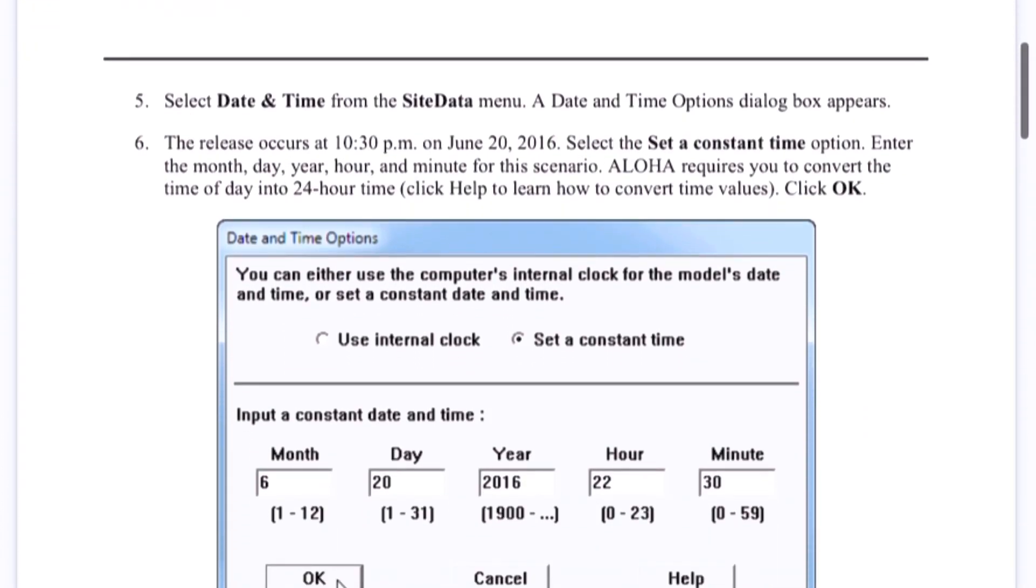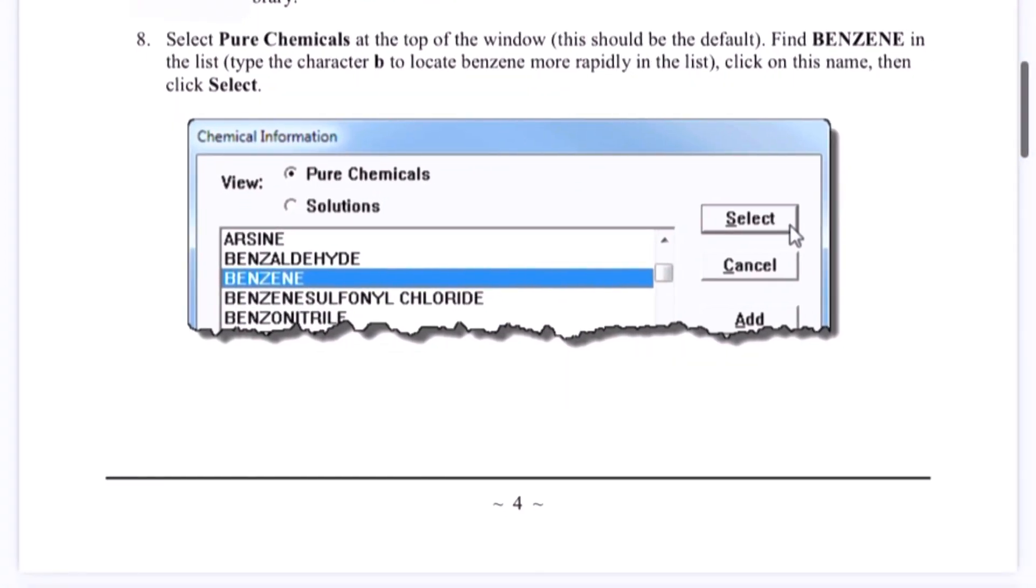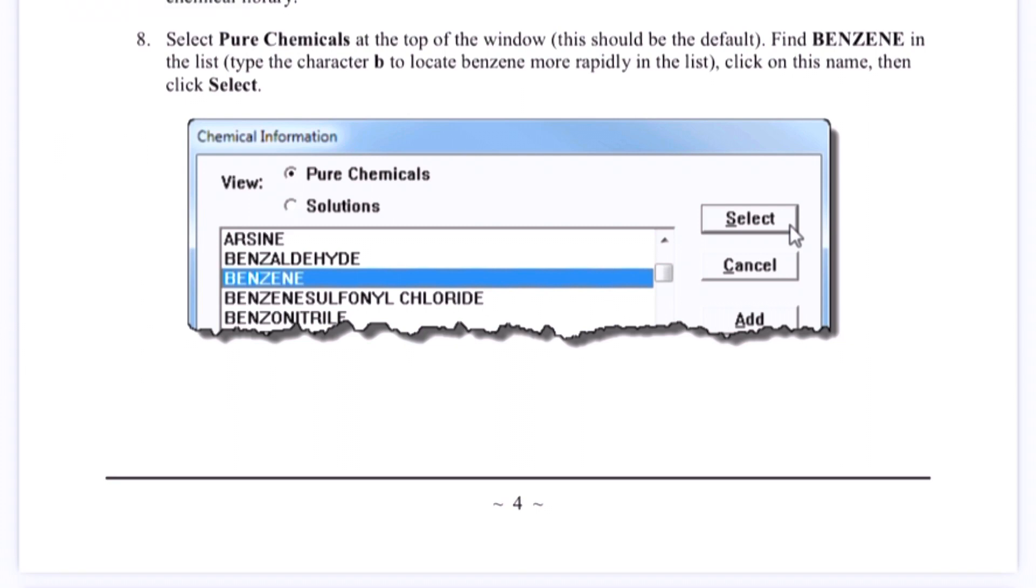Then next part will be the date and time. So you can pick the current date and time. Then after that, you have to select the chemical for which you want the modeling to be.